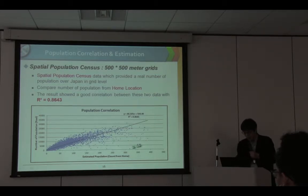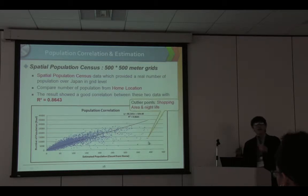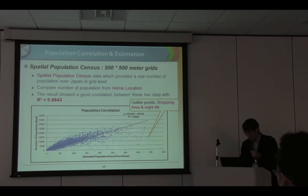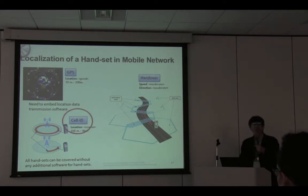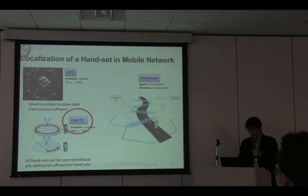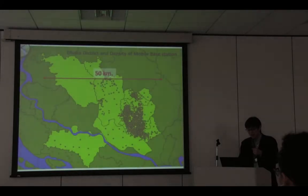You may still find some outliers. These are night entertainment spots where very many nighttime workers stay until 4 or 5 a.m. When you go outside of Japan, many people still use cell phones, but in such cases GPS receivers in mobile phones are not very popular. What we have is just the cell tower location as a kind of proxy for the individual user's location.